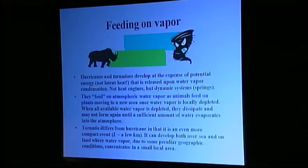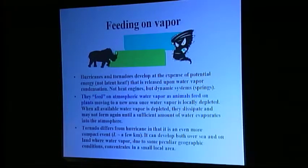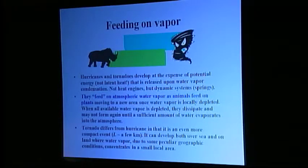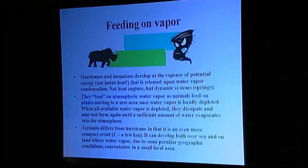We will now briefly summarize the new physics. Hurricanes and tornadoes develop at the expense of potential energy — not latent heat — that is released upon water vapor condensation. These are not heat engines, but dynamic systems that can be compared to compressed metallic springs. Hurricanes and tornadoes feed on atmospheric water vapor in very much the same manner as animals feed on plants. When water vapor is locally depleted, they have to move to a new area where it is abundant. When all the available water vapor is depleted, hurricanes and tornadoes dissipate and cease to exist, like animals die without food.